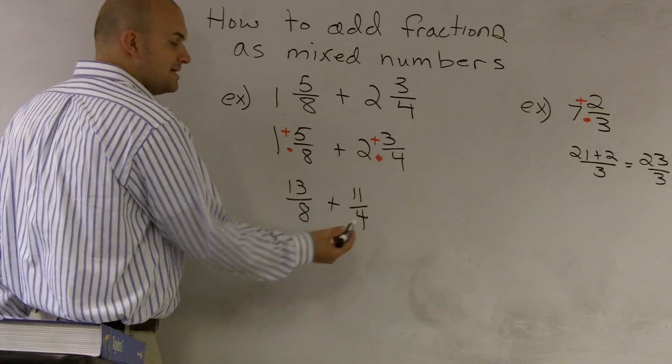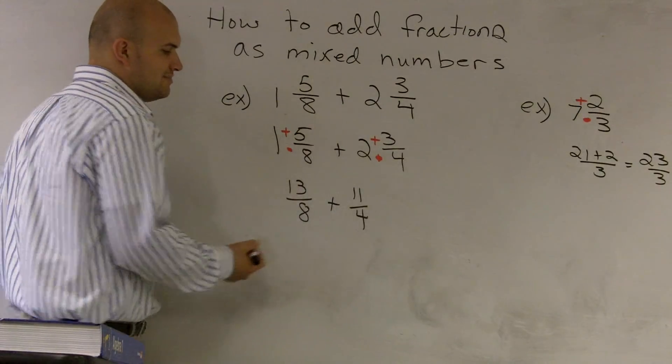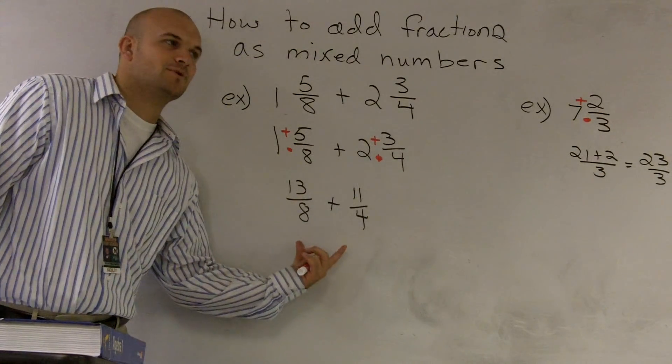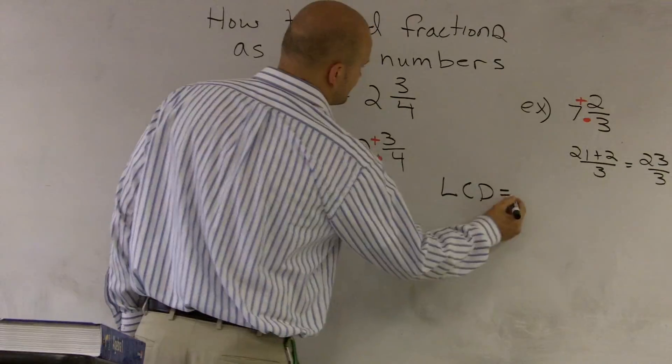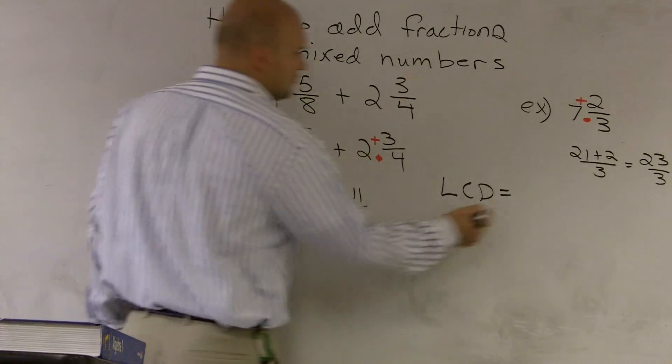What I've determined is my LCD is going to be what is the least common multiple that our denominators have in common. So what I find out is the LCD is going to equal 8.